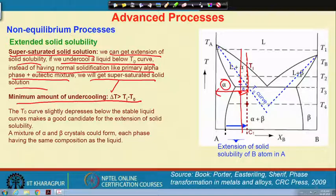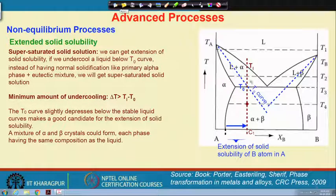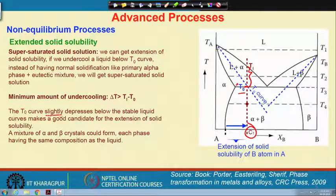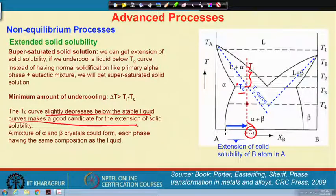One should keep in mind that the minimum undercooling ΔT should be TL minus T naught. For composition C1 we need this minimum amount of undercooling to go below the T naught line. The T naught curve slightly depressed below the stable liquidus curve makes a good candidate for extension of solid solubility.